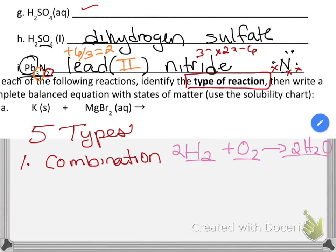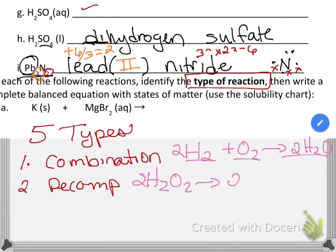A decomposition reaction is exactly the opposite of a combination reaction. We saw this in the demonstration where we took hydrogen peroxide and broke it down to form water and oxygen. That's a decomposition because you start with one thing and end up with two or more different things. As long as you're starting with one and ending with multiple, that's decomposition.